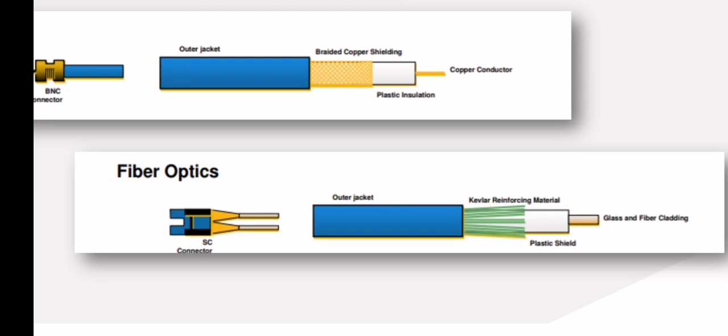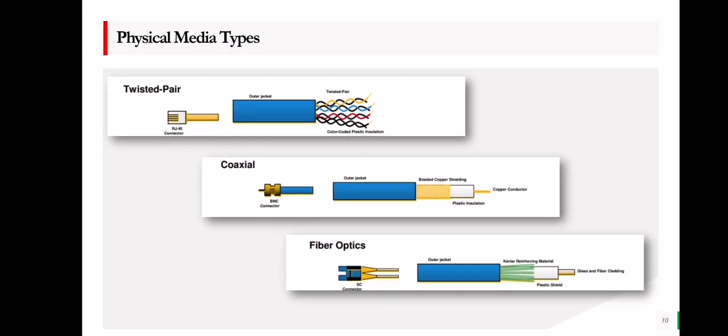You may have seen fiber optic cable — it is used for fast internet connections. The fourth physical media type is wireless connection, also known as Wi-Fi.